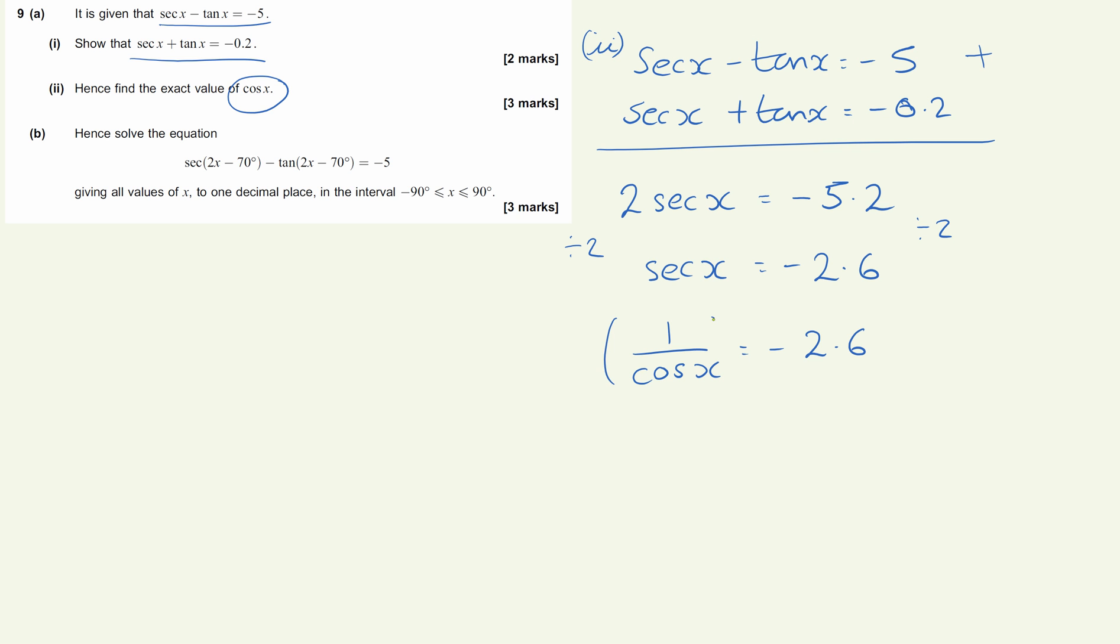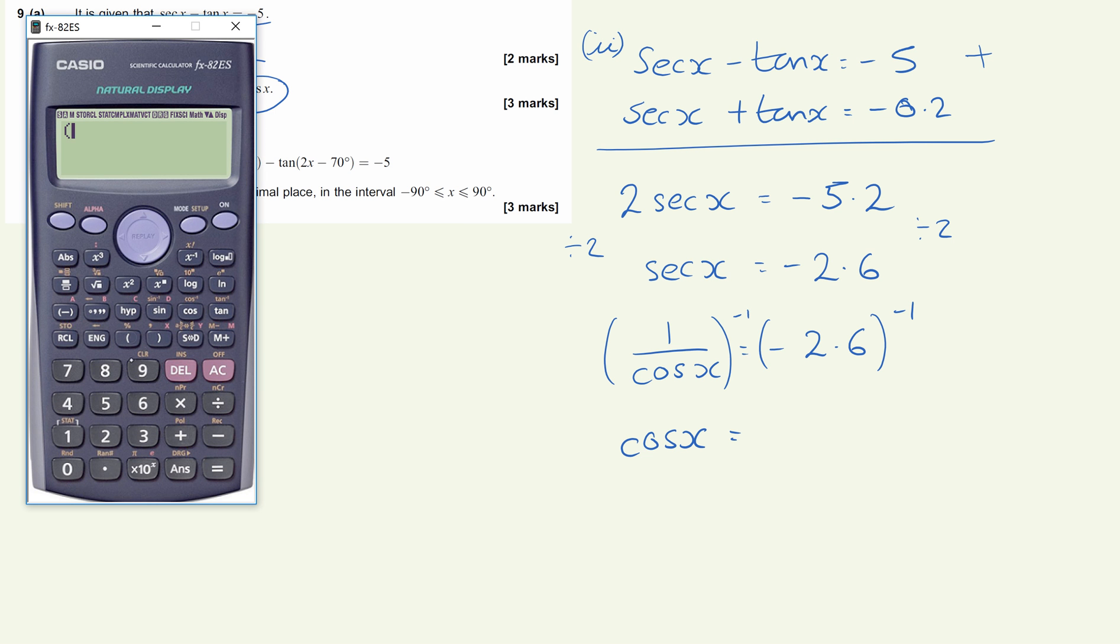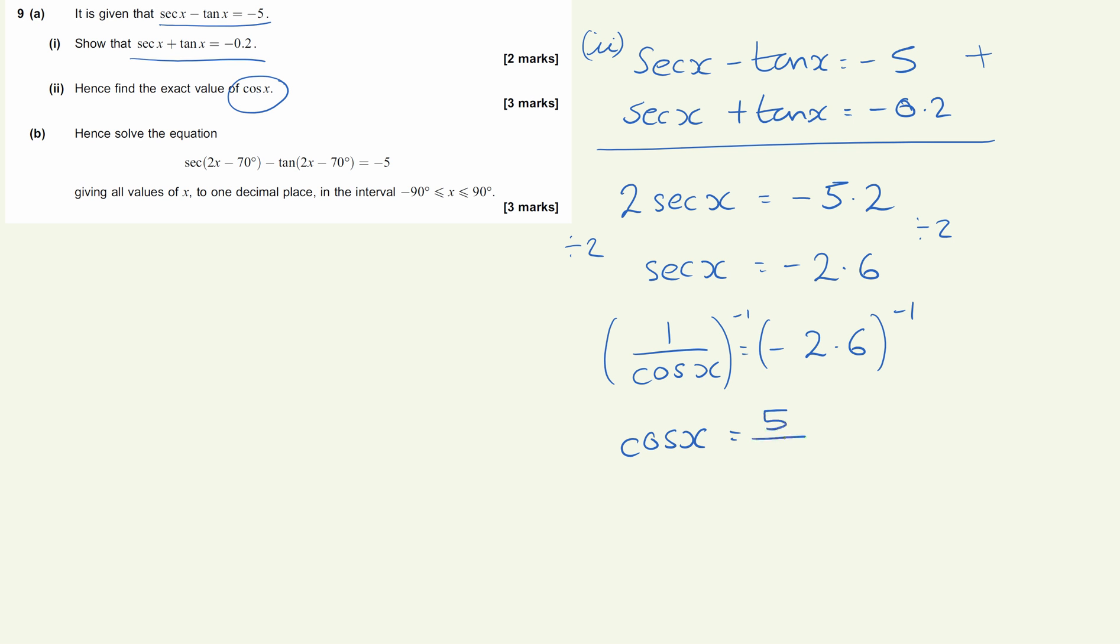And then what we're going to do is effectively put both of these things to the power of minus 1, because what the power of minus 1 will do is it allows us to flip the first fraction to give me cos x, and the second one which I'll use my calculator to do. So put minus 2.6 to the power of minus 1 in there, and that will flip that over to 5 thirteenths for us. So cos x is equal to 5 thirteenths. So that gives us our exact value of cos x.